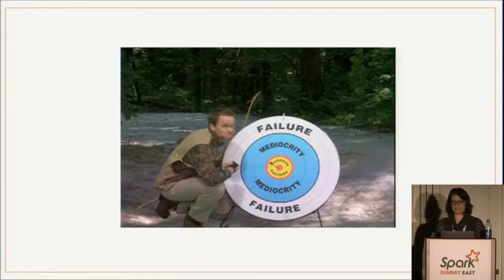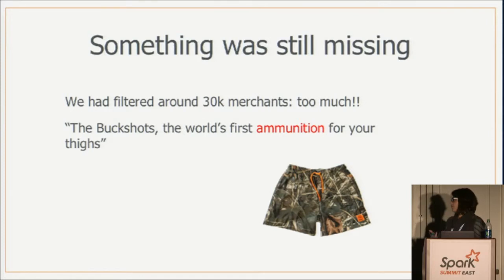I started looking at the results. Out of 100,000 stores, I had 30,000 filtered. That somehow sounded wrong — I knew the platform and there was no way 30,000 of them would be blacklisted. I started looking at samples of the filtered data. One of the top ones was a pair of shorts — nothing wrong with it, okay for Pinterest — but in the description it says 'the box shots, the words, first ammunition for your thighs.' So obviously the word 'ammunition' would filter these shorts. As humans we can put context around information, but for machines it's not that easy — the rule is just: if this word appears, filter it.